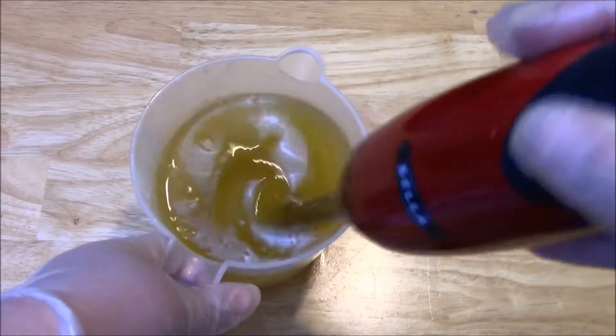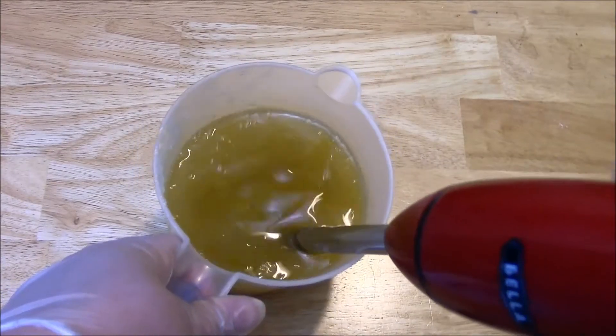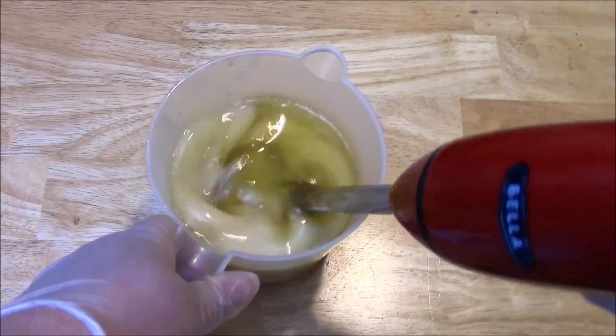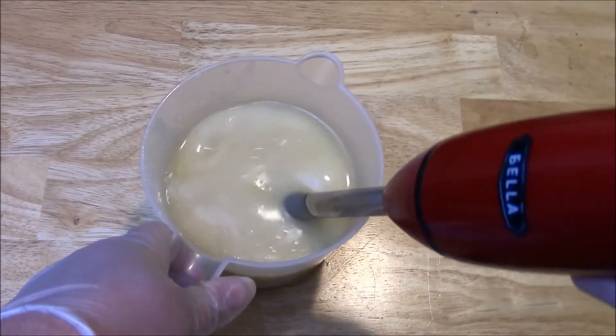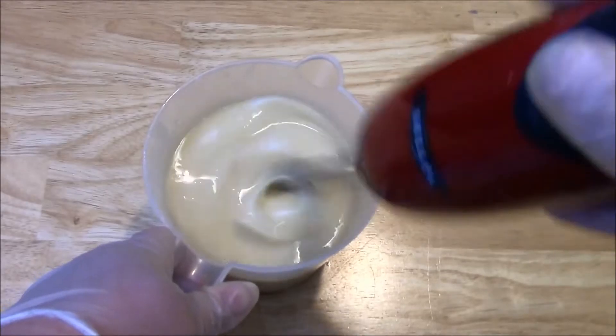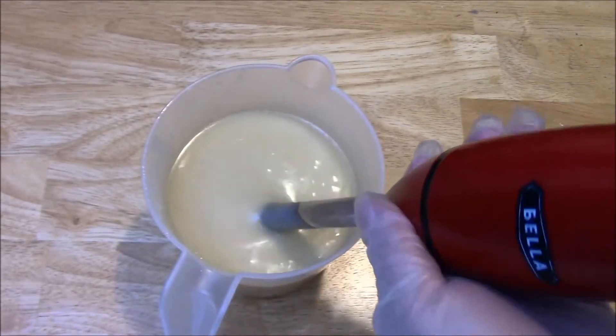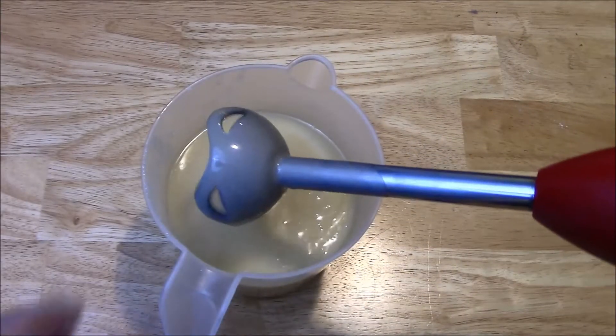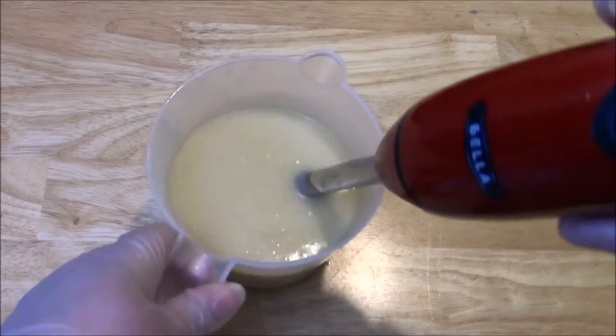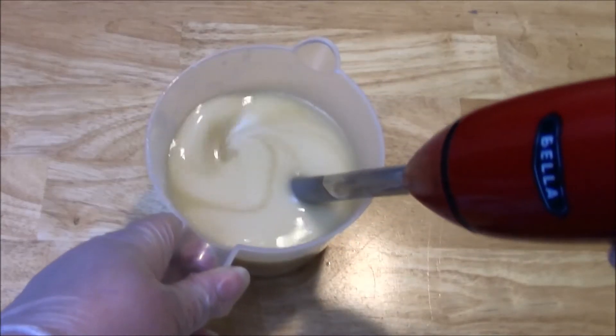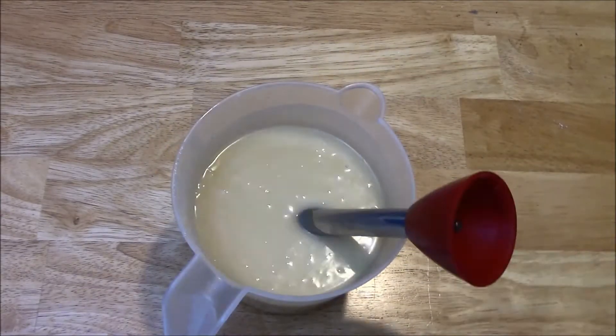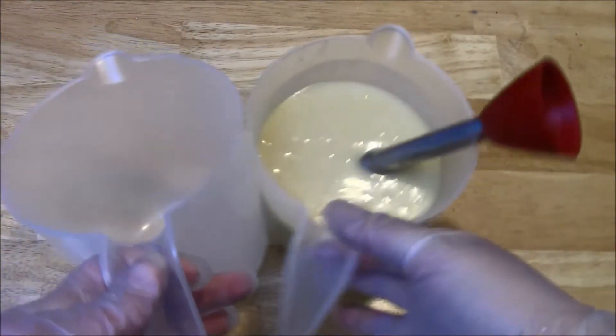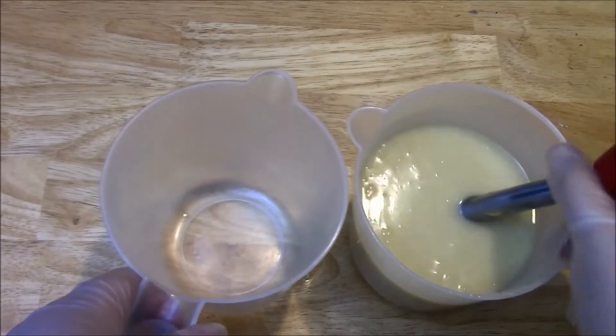So here I've added the lye water to the oils and I'm just going to blend this together. Ghost flower is a floral fragrance so it's going to accelerate a little bit, so I need to work quickly once I add the fragrance. I don't want to get this batter too thick. I'm just going to leave it fluid like this and we're going to divide it roughly in half.